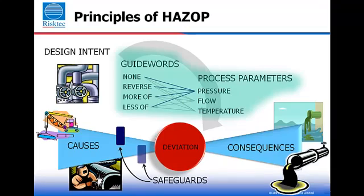What safeguards exist that may prevent or mitigate against the hazard occurring in the first place? What corrective actions can be applied to mitigate against the hazard progressing through to the worst possible consequence?